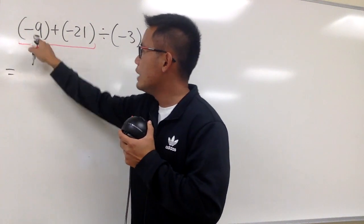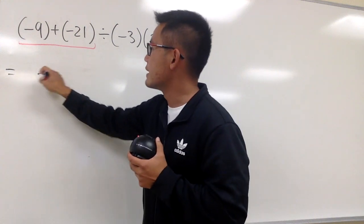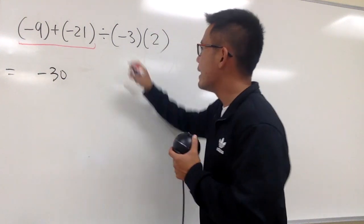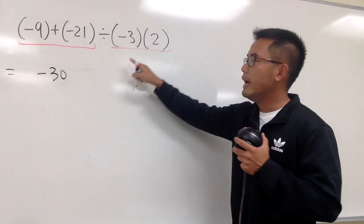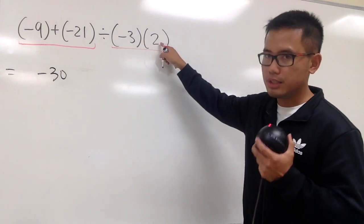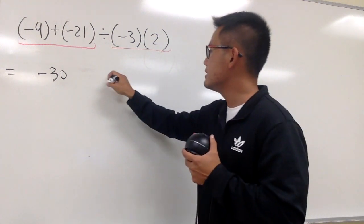And as we can see, we have negative 9 plus negative 21, so that's what? That's negative 30, isn't it? And likewise, we also have these two parentheses. This is negative 3, and we have to multiply with positive 2. Negative 3 times positive 2, we get what? That's negative 6, right?